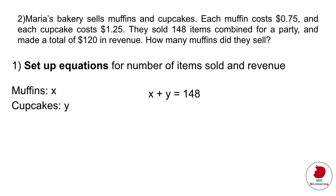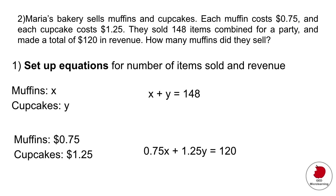The second equation relates to revenue. We know muffins are worth $0.75 and cupcakes are worth $1.25, so we use: 0.75x plus 1.25y equals 120 dollars in revenue. That's step one.